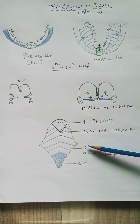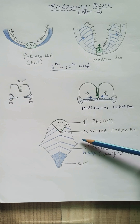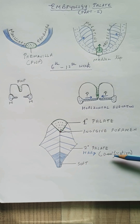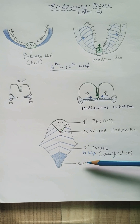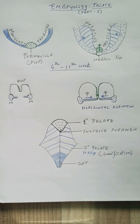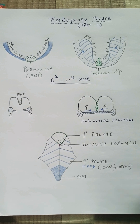The secondary palate is the one formed by the palatine shelves. It is further divided into a hard palate and a soft palate. The part that undergoes an intramembranous ossification process becomes the hard palate, while the part that does not undergo this process forms the soft palate and the uvula behind. This is the overview of the embryology of the palate, which will help you understand the classification shown in part two of this video.